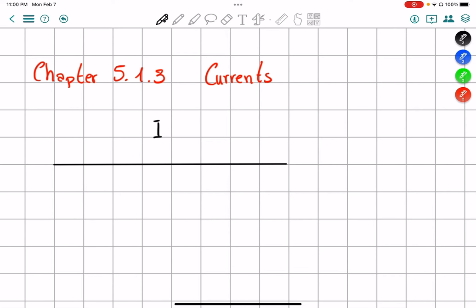And since it has a direction, current is a vector. Therefore, we have to think about this not as just a number, but also as a number with a direction. Anyway, how do we find it?